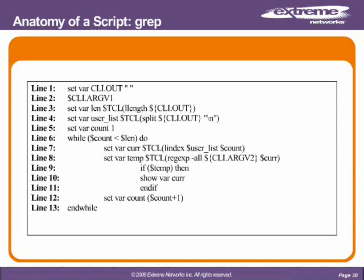The loop continues to execute: set var cur, set var temp — and it repeats. Each time, the set var count will increment itself, and eventually, once that length is reached, the while loop conditional of while count is less than len will no longer be true, and the script will finish. While this is occurring, the show var current will display each line that it finds is true. This is emulating the Linux grep functionality for looking for lines with certain strings in them.